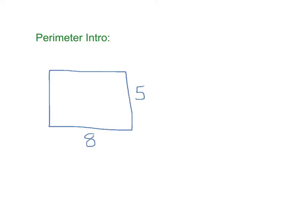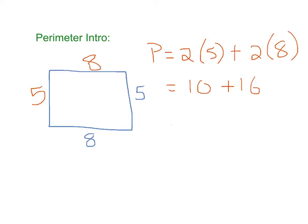If you have a rectangle, opposite sides are the same. So in this case, its perimeter is simply 5 plus 5 plus 8 plus 8, or 2 times 5 plus 2 times 8, which is 10 plus 16. The perimeter equals 26.